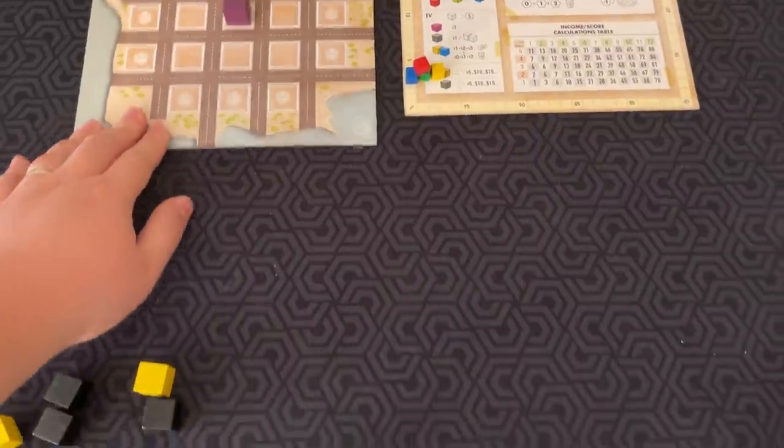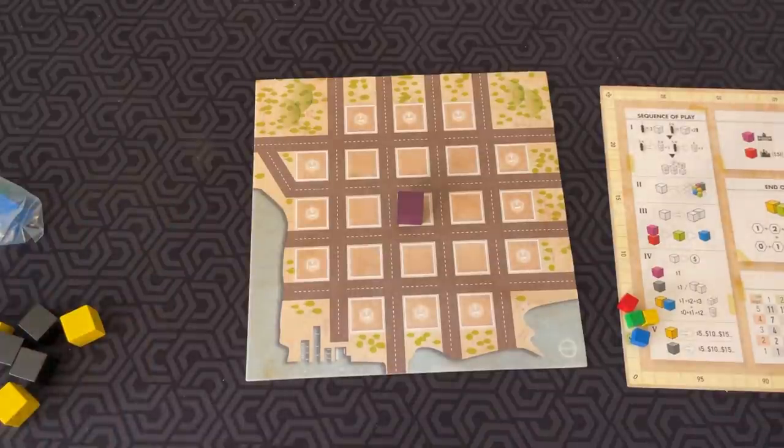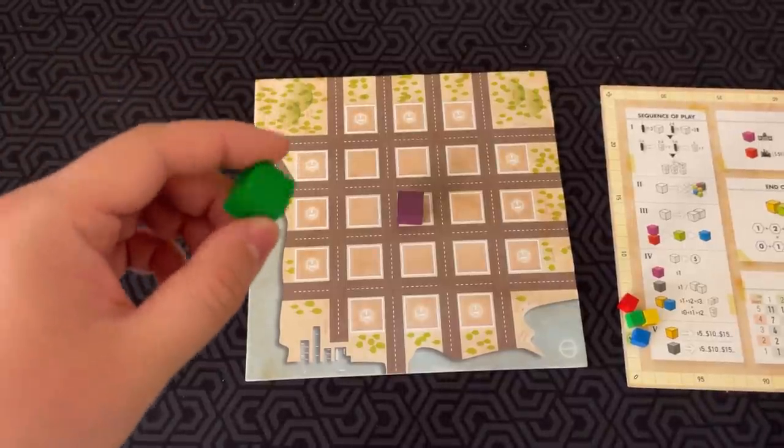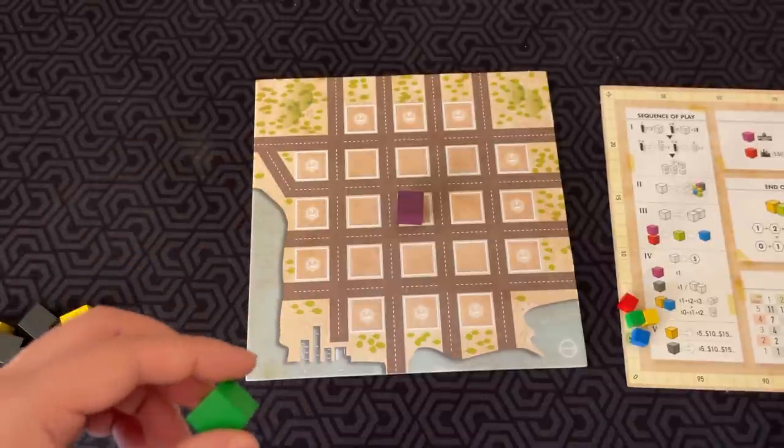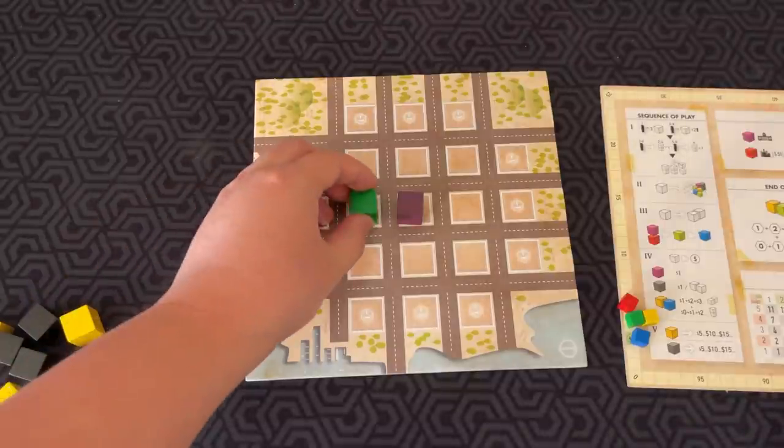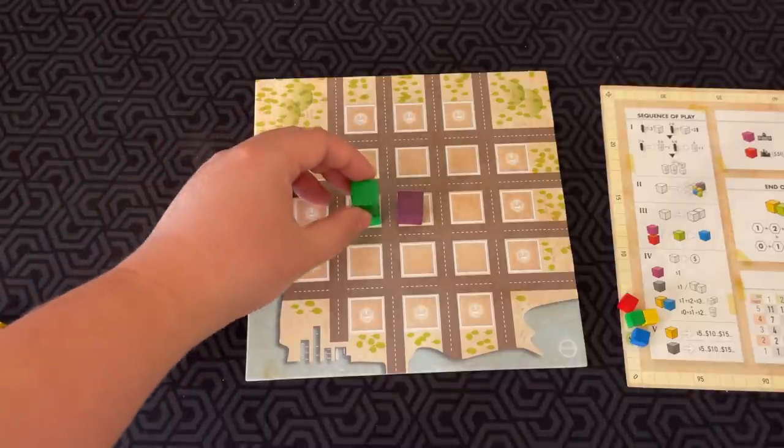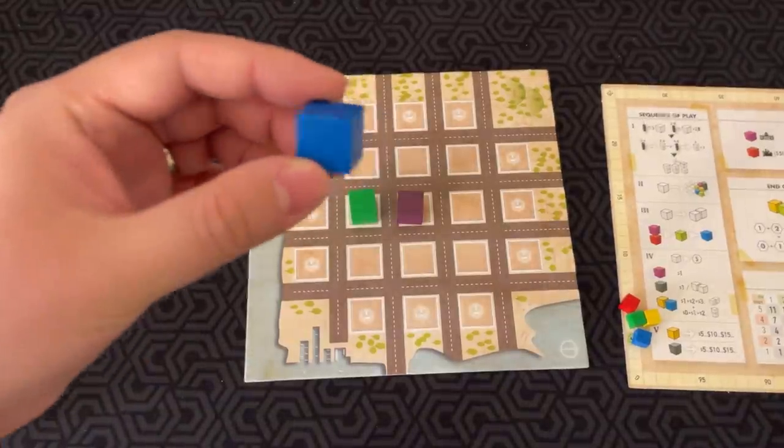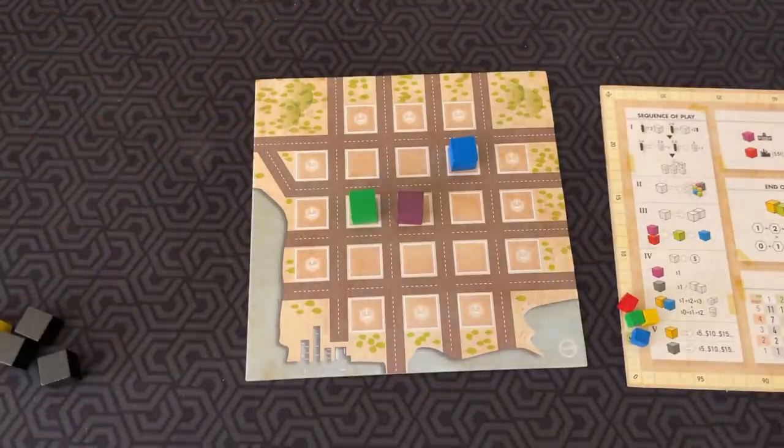Then, in the construction phase, you have to build the cubes you got. This purple cube, you start with at the beginning of the game. It counts the same as an office cube. Now, there are building regulations. These green cubes are residential cubes, and they cannot be placed in a position adjacent to another residential cube during this phase. What adjacent means is if it's orthogonally adjacent, or if it's directly on top or below. The same rule applies to blue cubes, which are commercial buildings.